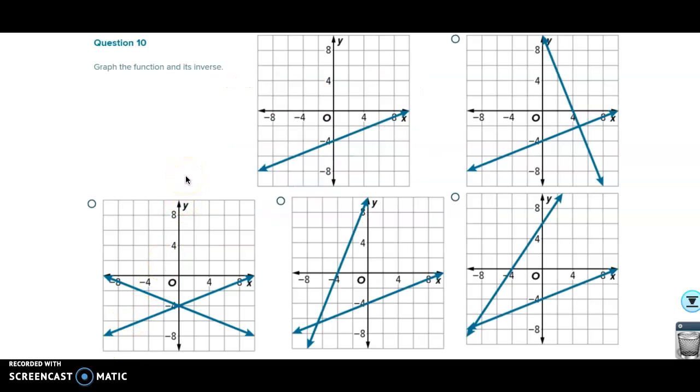On question 10, this one is asking you to find the graph that shows the inverse of this line. Well, when we find an inverse of a line like this, what we do, let me switch to pen here so I can show you what I'm talking about. What we have to realize is that the inverse is a reflection of this line over the y equals x line. Well, this would be the y equals x line here. Which one of these shows a second line which would be the reflection of this over that line? Clearly, this is the correct one.